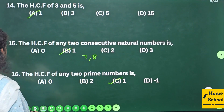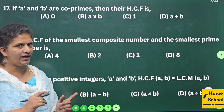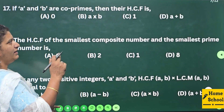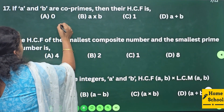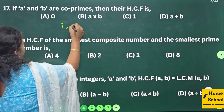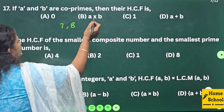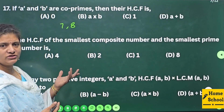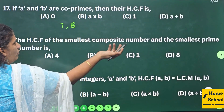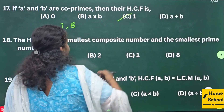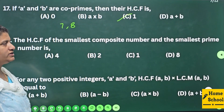Question 17: If a and b are co-primes, then their HCF is — if a and b are co-primes, take 7 and 8 as an example; their HCF is obviously 1. So if a and b are co-primes, their HCF is option C: 1. Question 18: The HCF of the smallest composite number and the smallest prime number — the smallest composite number is 4 and the smallest prime number is 2.